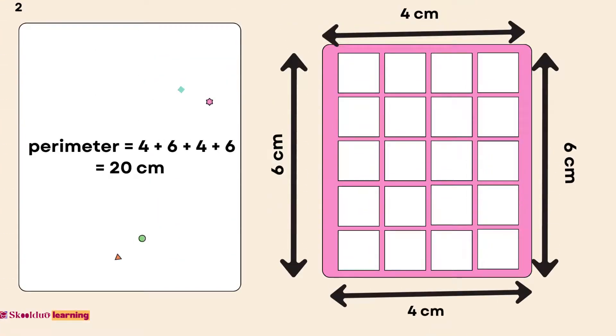Number 2: Perimeter equals 4 plus 6 plus 4 plus 6, which is equal to 20 cm.